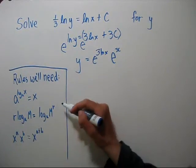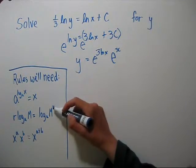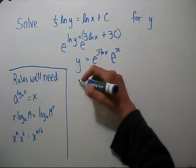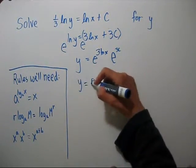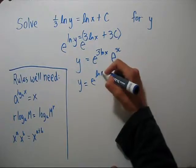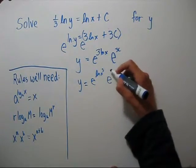If we have a number times the log, we can put that number up as the exponent. So we'll have y equals e to the natural log of x cubed times e to the 3C.